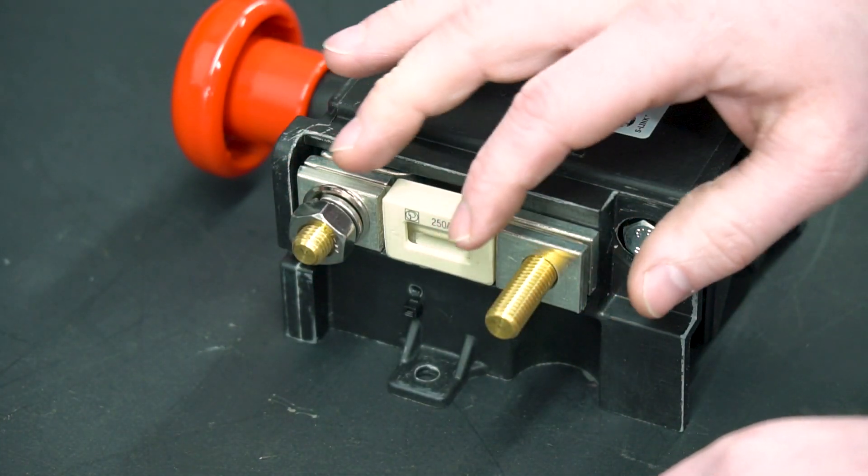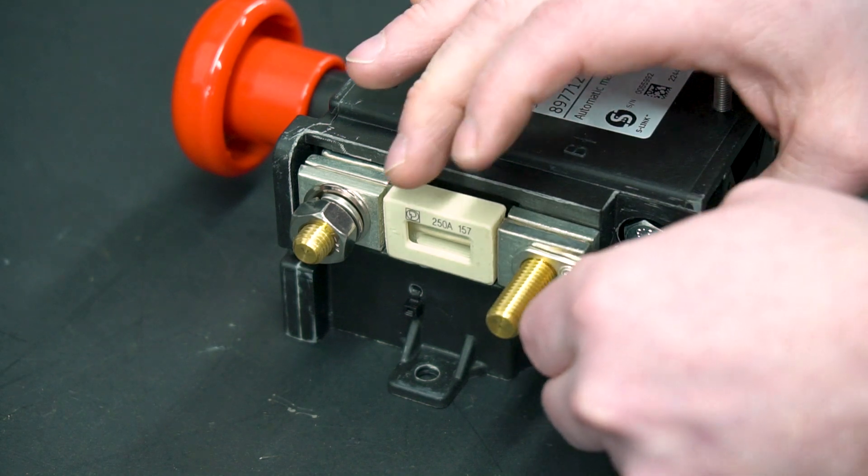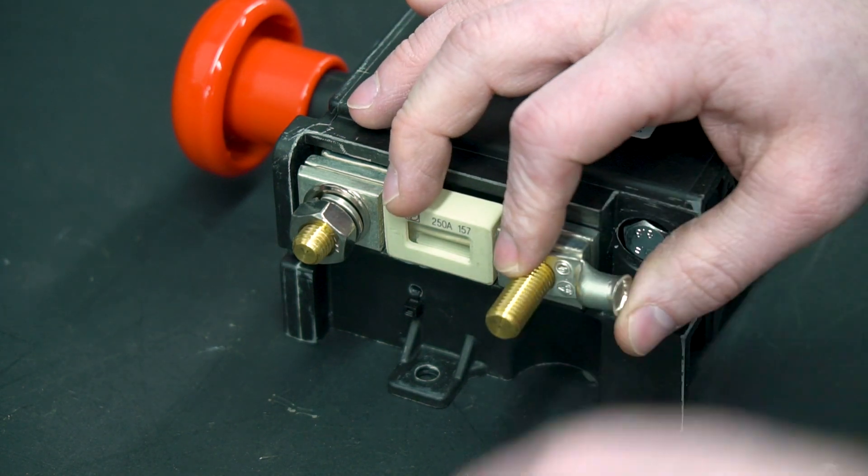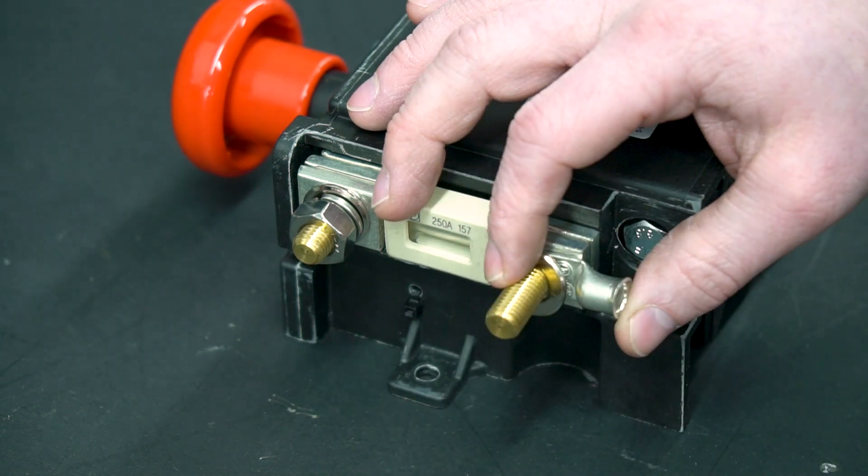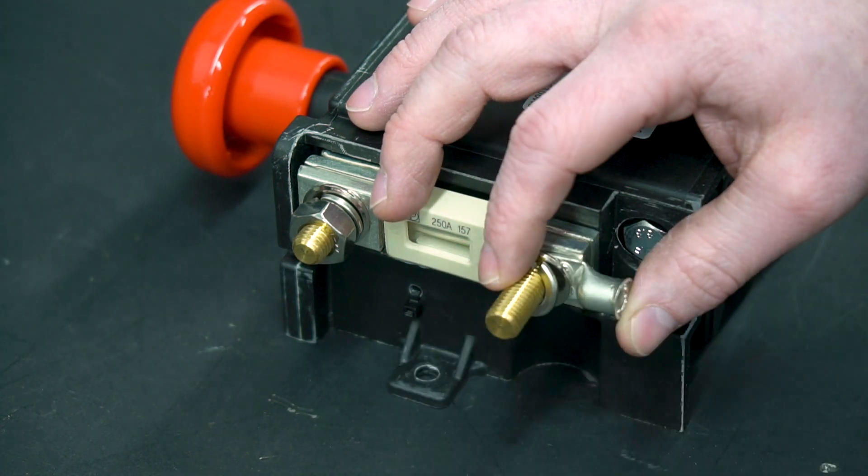On the lower terminal, your battery cable would go on top of the square washer, followed by your flat washer, your lock washer, and your nut.